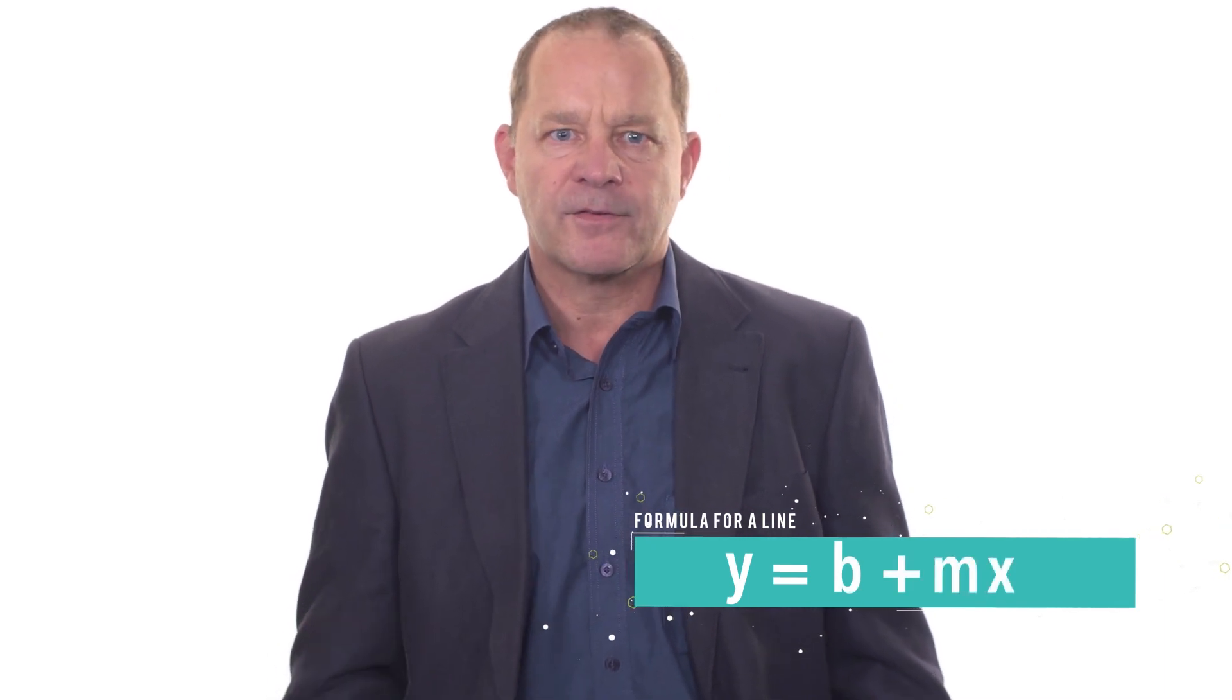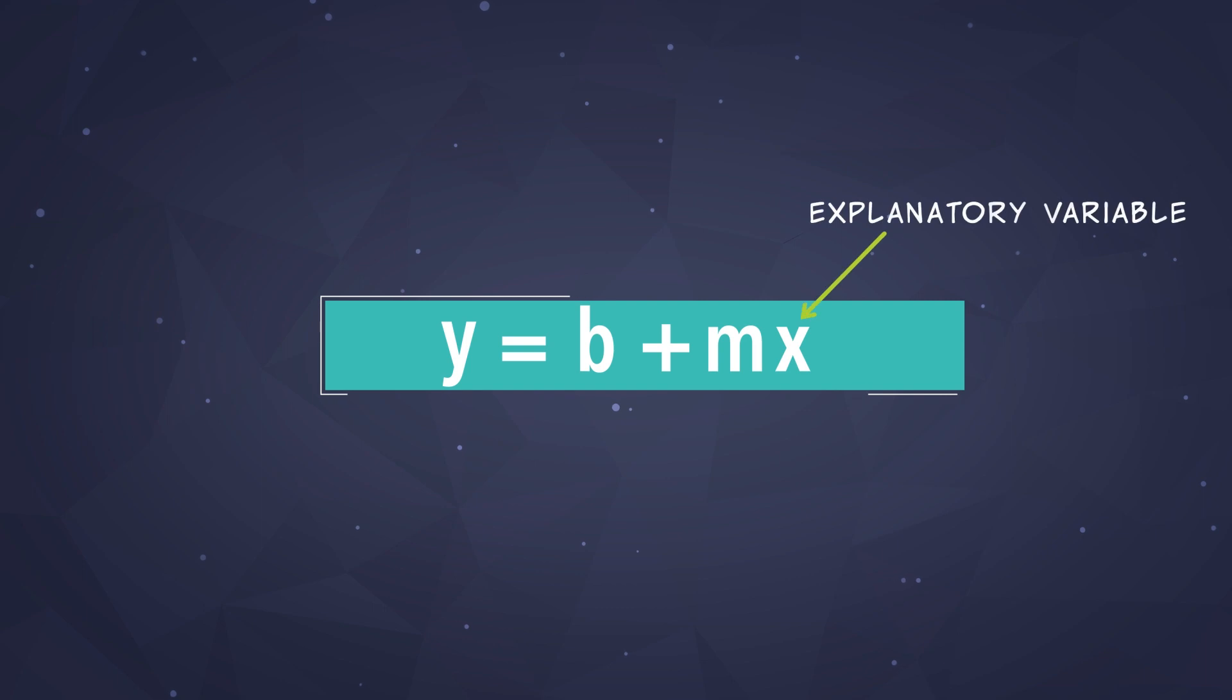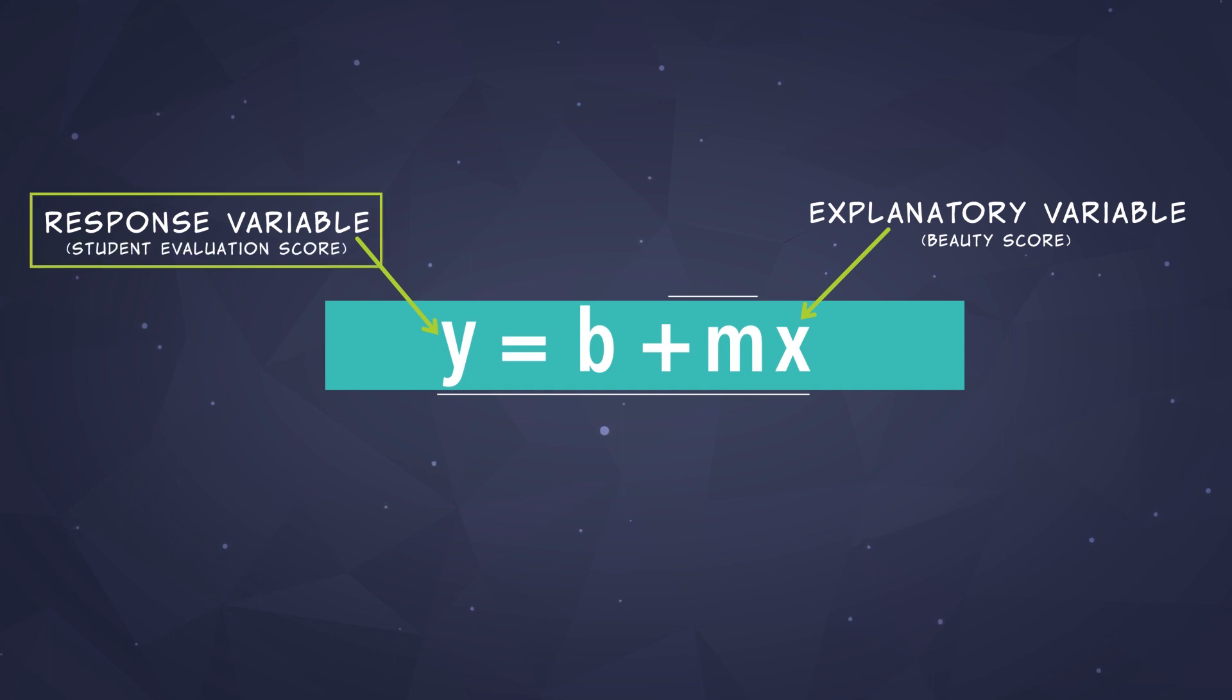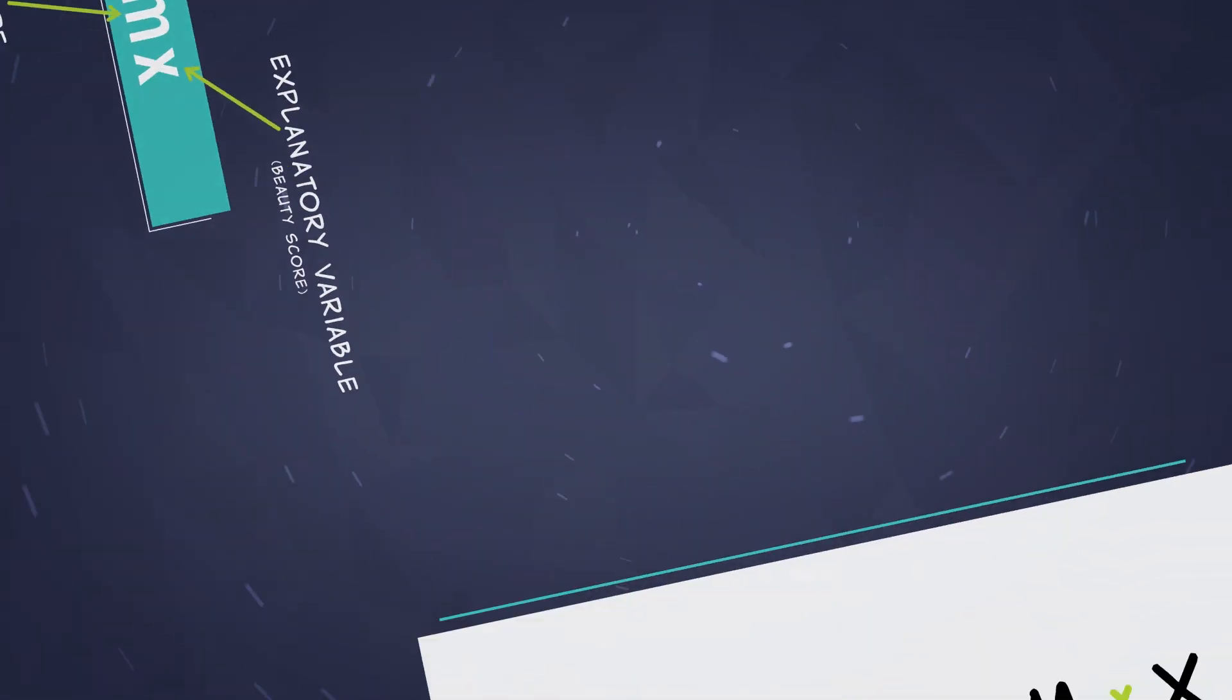x is called the explanatory variable. In our data set, x is the beauty score. We are using it to explain the value of y, which is called the response variable. In our case, that's the student evaluation score. So, the student evaluation score is responding to a change in the beauty score. b is commonly called the y-intercept and m the slope of the line. In the regression, that formula is often written out like this. The response variable, that is, the student evaluation score equals the y-intercept plus the slope times the explanatory variable, that is, the beauty score.